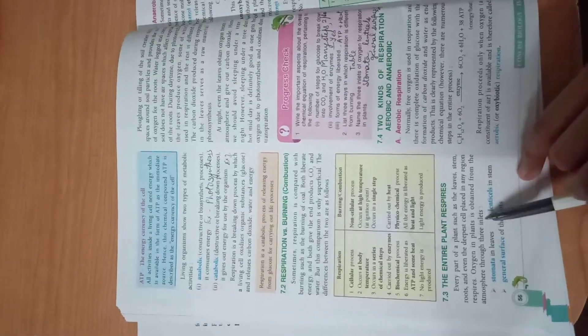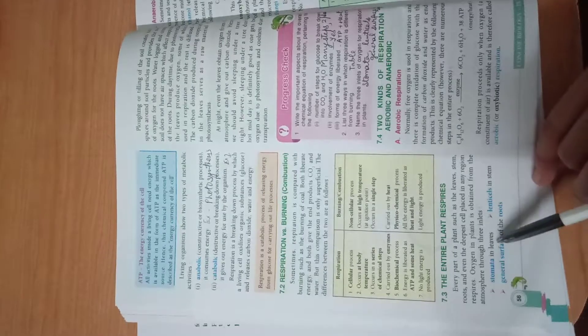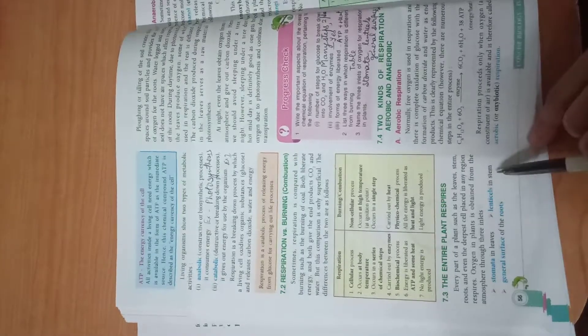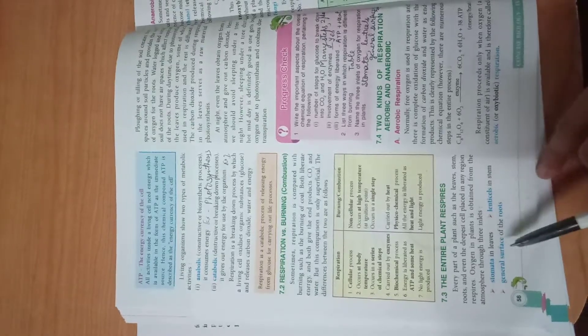Every part of the plant such as leaves, stem, roots, and the deepest cells placed in an aerial region respire. Oxygen in plants is obtained from the atmosphere through three inlets: stomata, lenticels, and general surface of the root. Stomata are present in leaves, lenticels are present on the stem.